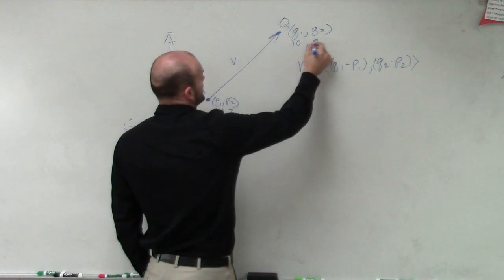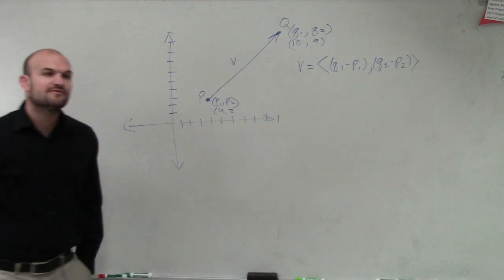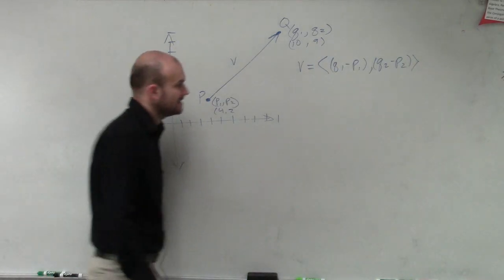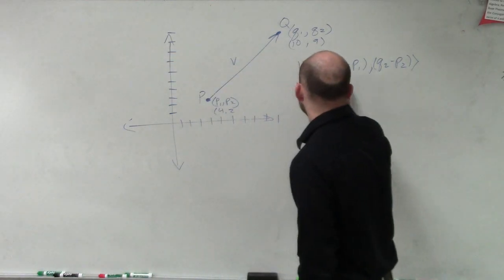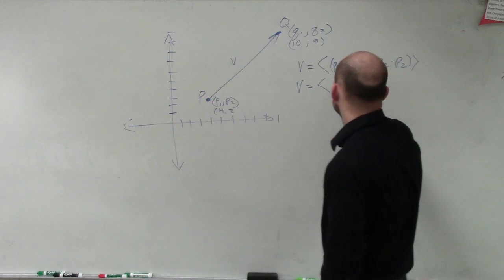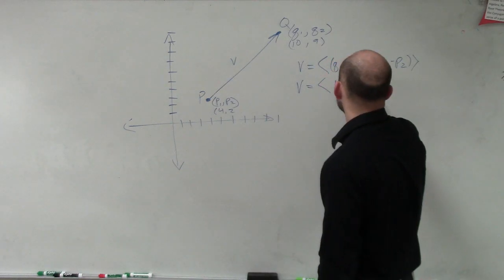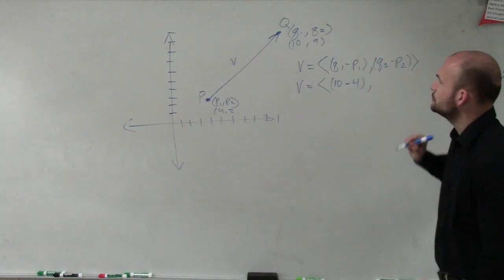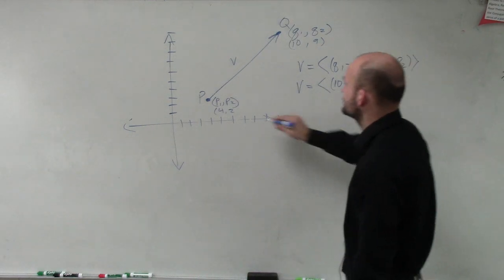So if I wanted to find the component form of this vector v, I would do v equals 10 minus 4 comma 9 minus 2.